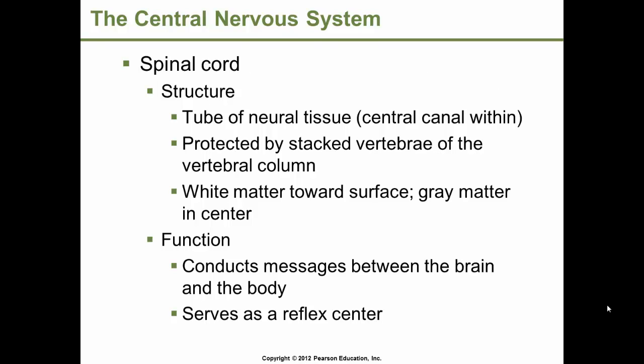The spinal cord's structure is a tube of neural tissue. The central canal is contained within, and it's protected by stacked vertebra, the vertebral column. White matter consists of myelinated axons grouped into tracts. The ascending tracts carry information to the brain, while the descending tracts carry information from the brain to a nerve leaving the spinal cord.